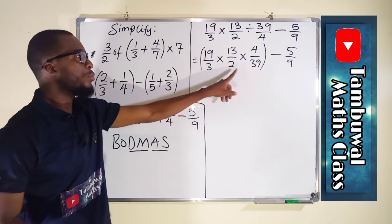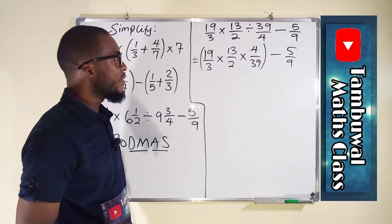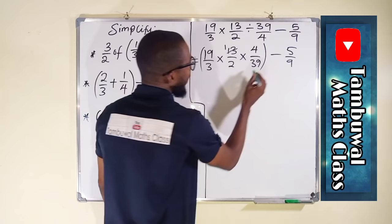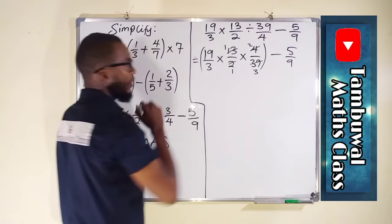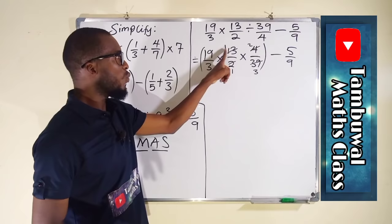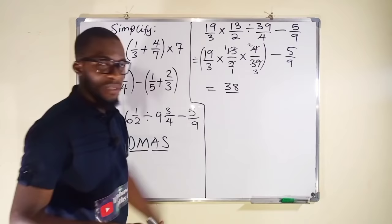Since all remaining operations are multiplication, we can multiply numerators and denominators together. For simplicity, let us reduce first: 13 goes into 13 once and into 39 three times; 2 goes into 2 once and into 4 twice. What remains in the numerator is 19 times 1 times 2, which equals 38. In the denominator we have 3 times 3, which is 9. We now have 38 over 9, minus 5 over 9.